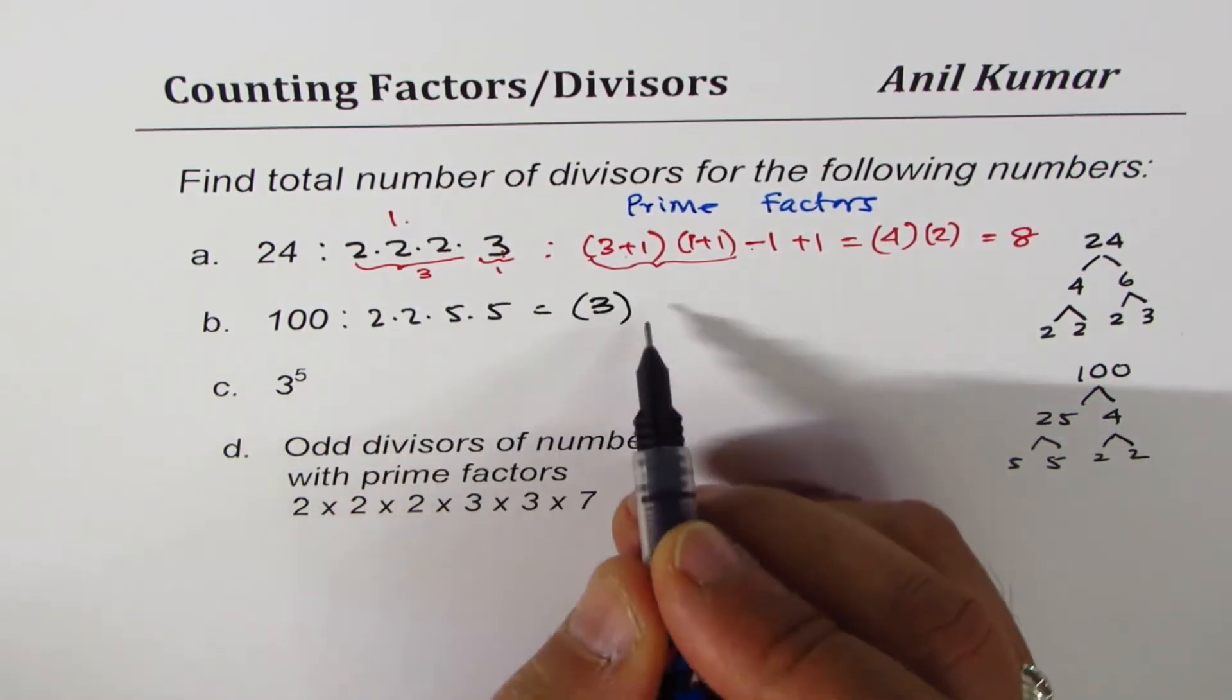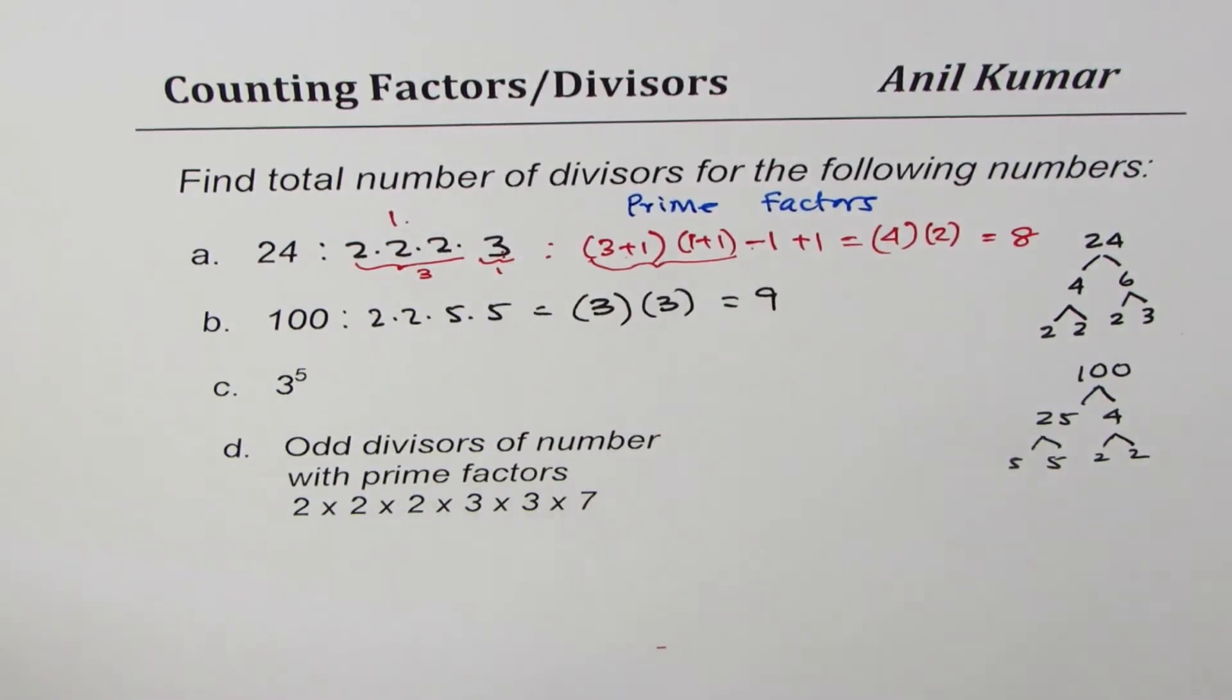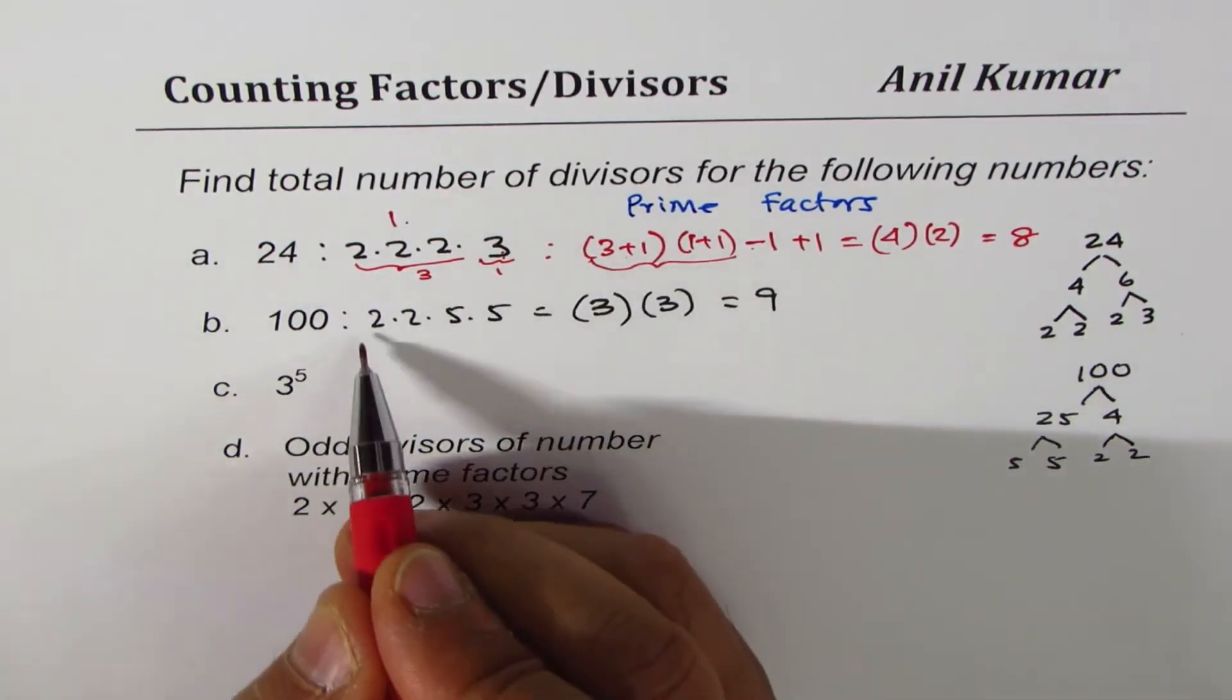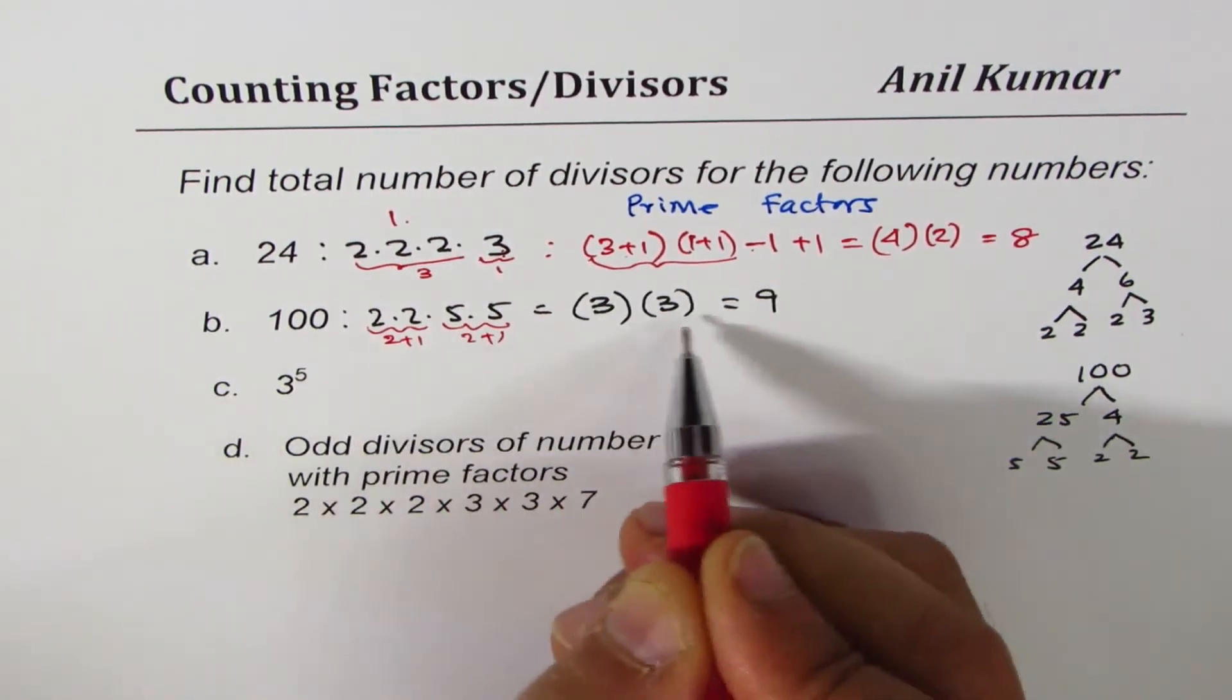There are 2 2's so that gives us 3 combinations. There are 2 5's that gives us 3 combinations and so the answer is 9. These are 2, so this is 2 plus 1, and these are 2, 2 plus 1, 3 times 3 is 9. Correct.